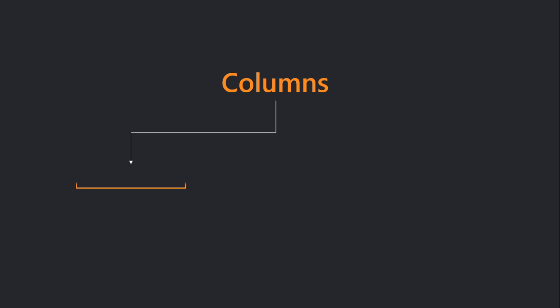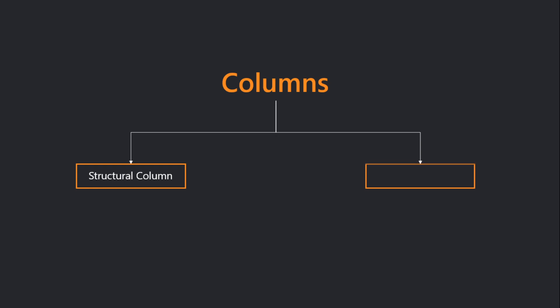Welcome. We'll learn how to place columns in Revit Architecture. There are two types of columns in Revit. The first one is a structural column, which is a load-bearing element added to the building model — used when doing foundation work. The second one is an architectural column, which is added around structural columns for decorative applications.